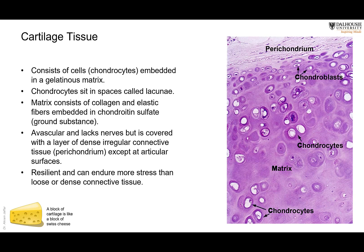Cartilage consists of cells — blast-type cells and cyte-type cells. Since this is cartilage, the cells are called chondro. Chondro means cartilage, so we have chondroblasts. They start as chondroblasts, which have the ability to divide and lay down matrix. The chondroblasts divide, form more chondroblasts, and lay down matrix until they become imprisoned in the matrix — in spaces or lakes called lacunae. Lacuna means small lake. They then become chondrocytes, which lose the ability to divide and can no longer lay down more matrix, but they can maintain the matrix.